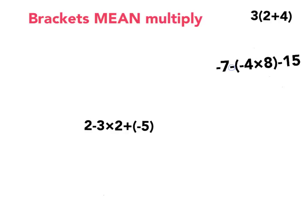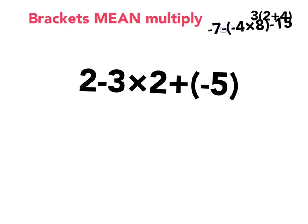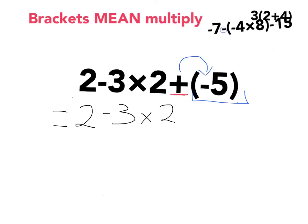Brackets mean multiply. Here's my bracket — everything's worked out within the bracket. I need to look and see what's directly next to the bracket. I've got a plus here, and I am multiplying that with what is within the bracket. I am multiplying a positive by a negative. Negative signs are different — it's a negative. Signs are the same — it is positive. So that will be negative five. I've multiplied a positive by a negative which gives me a negative. All you need to remember is that brackets mean multiply — multiply what is directly in front of them.